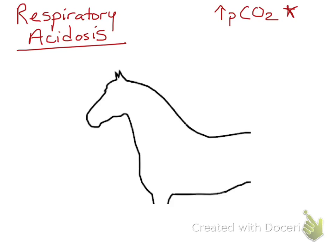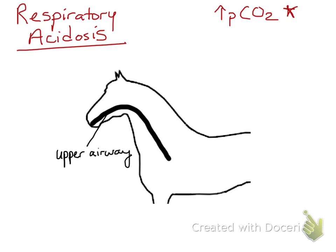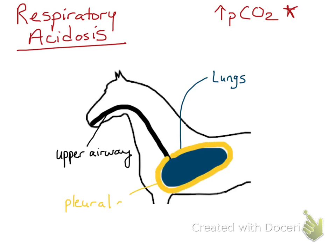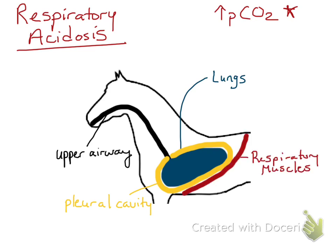I'm going to draw an outline and also some anatomical features of this horse, which includes the upper airway — so the trachea, the oral cavity — which of course goes to the lungs. The lungs are surrounded by a dead space, which is the pleural cavity, and that pleural cavity is supported by respiratory muscles. I've drawn the diaphragm here to represent the respiratory muscles, but that certainly includes the intercostal muscles as well. And finally, the respiratory center, which is in the medulla of the brain.